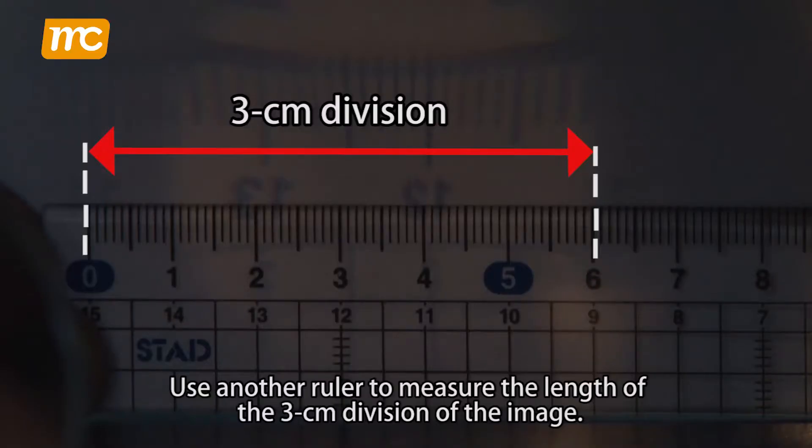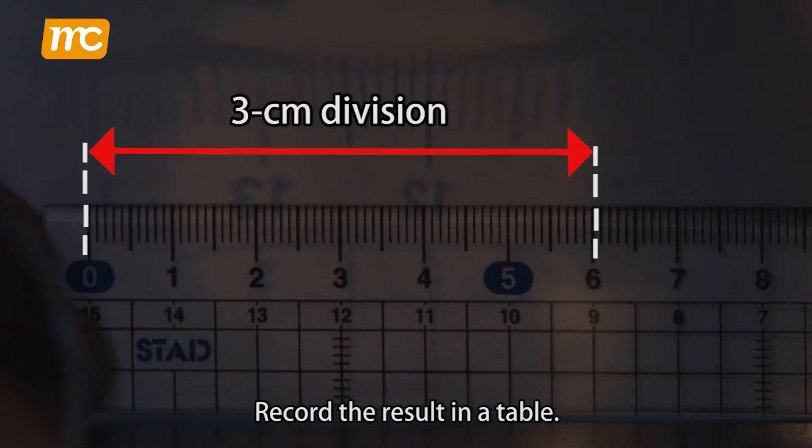Use another ruler to measure the length of the 3cm division of the image. Record the result in a table.